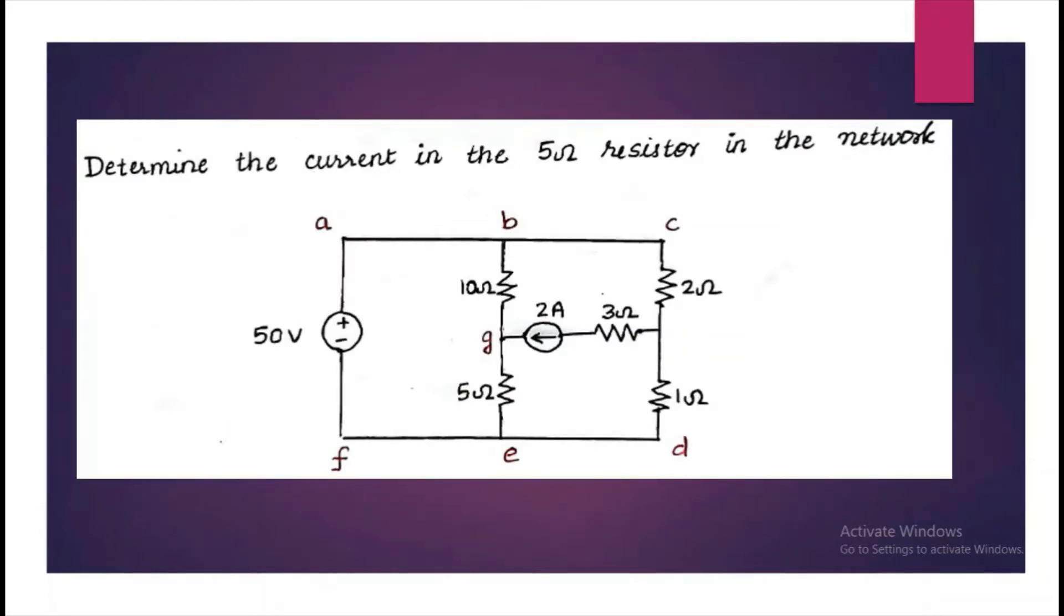So, now let's do a problem based on this concept. Determine the current in 5 ohm resistor in the network. You can see that there are three meshes and a current source common to mesh 2 and 3.